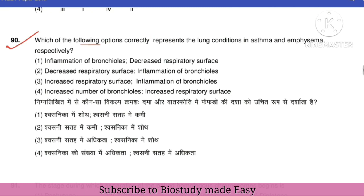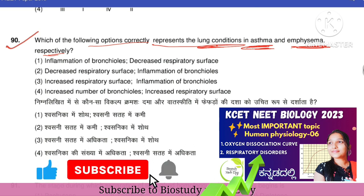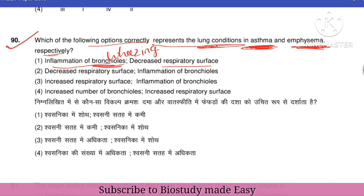Next question: which option correctly represents lung conditions in asthma and emphysema respectively? In asthma, there is inflammation of bronchioles, causing wheezing and breathing problems. In emphysema, alveoli get damaged — mainly due to smoking — so the respiratory surface decreases. The right option is option one: inflammation of bronchioles for asthma and decreased respiratory surface for emphysema.